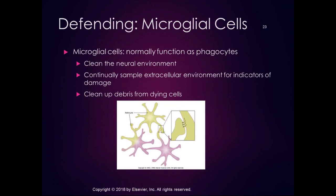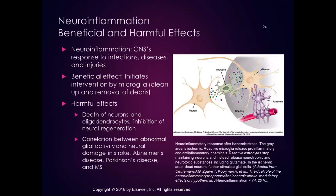Worms have 0.4 glial cells per neuron, rodents have 0.7, and dolphins have three glial cells per neuron — just an interesting fun fact. Now wrapping up this section, we're going to start talking about neuroinflammation, which has to do with glial cells but more with pathology.